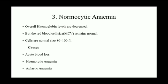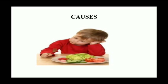Normocytic anemia mein overall hemoglobin level decrease ho jata hai lekin red blood cell ya MCV normal rehta hai. Cells ka normal size 80 to 100 fL hota hai. Iske karan: acute blood loss, hemolytic anemia, aur aplastic anemia ho sakte hain.